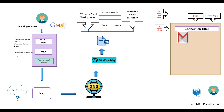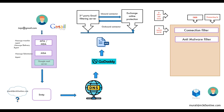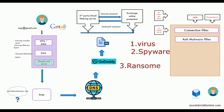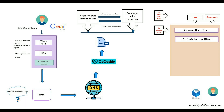After the connection filter, Exchange Online checks the safe sender list maintained by the recipient — a junk email setting configured within Outlook or OWA by the end user. If the email passes all these checks, it moves to the next filter: the anti-malware filter. Anti-malware filters scan all incoming and outgoing emails in Exchange Online, covering three major malware categories: virus, spyware, and ransomware. It scans the mail body and any attachments, and if malware is found, that mail is moved to quarantine.